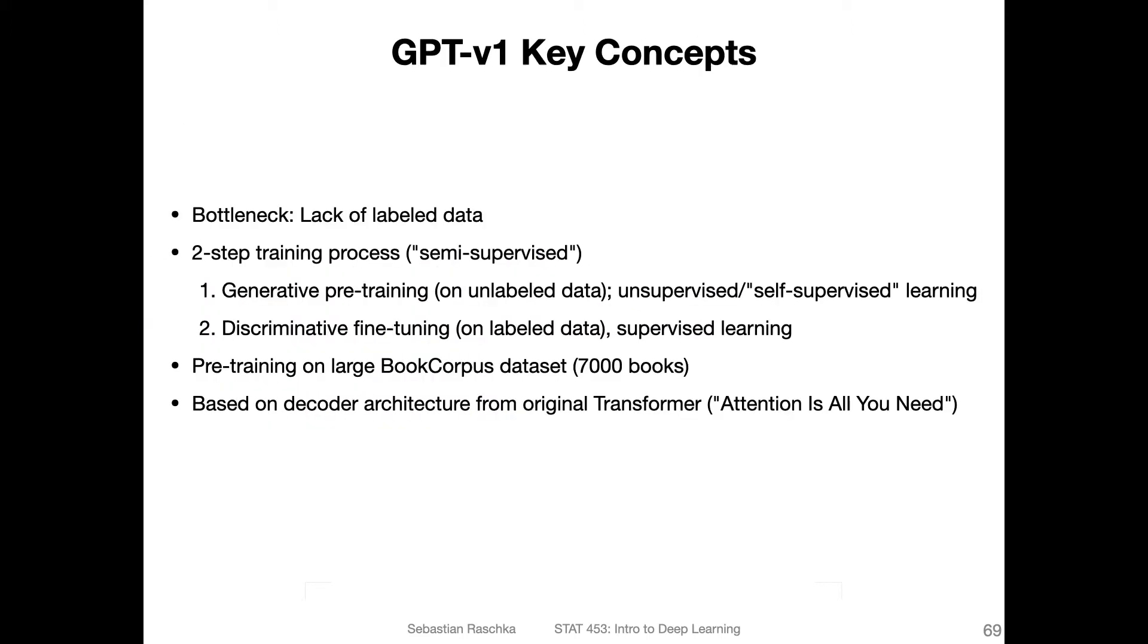One of the main ideas behind the GPT model is what they hypothesize is that the lack of labeled data is one of the main bottlenecks behind scaling up the performance of large language models. So they propose a two-step training process. In this paper, they refer to it as semi-supervised learning. In general, semi-supervised learning essentially means leveraging labeled and unlabeled data.